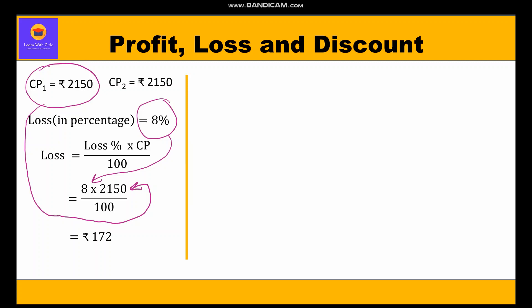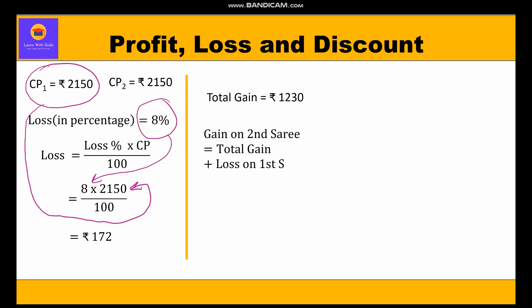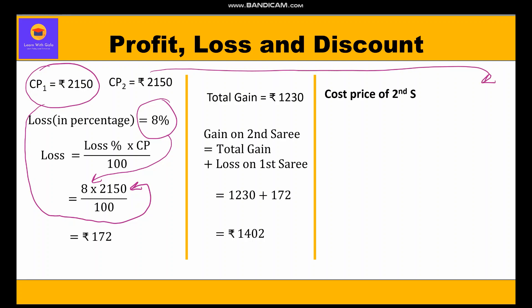The total gain is rupees 1230. Gain on the second sari equals total gain plus the loss on the first sari, which is 1230 + 172 = rupees 1402 as gain on the second sari.